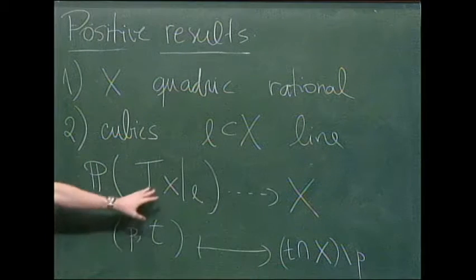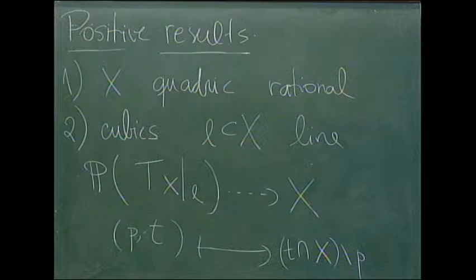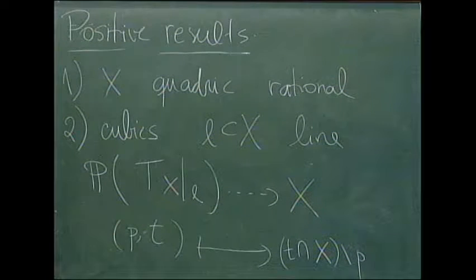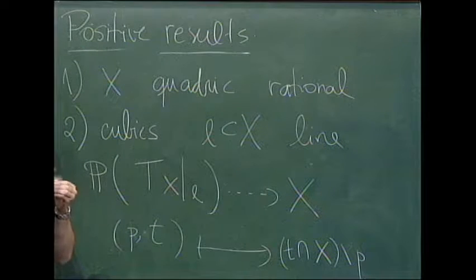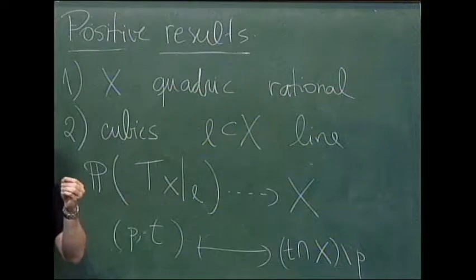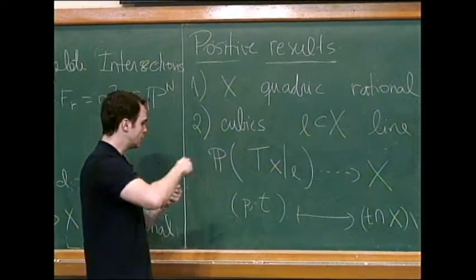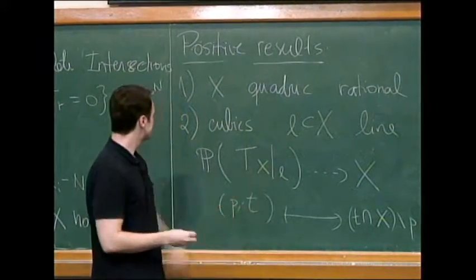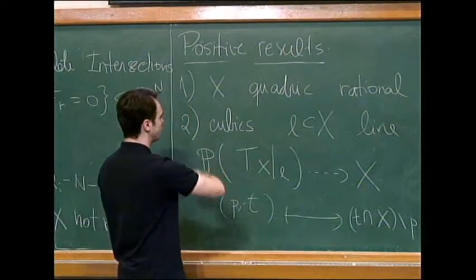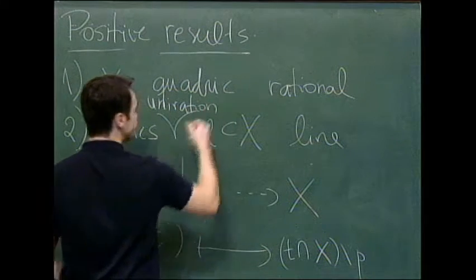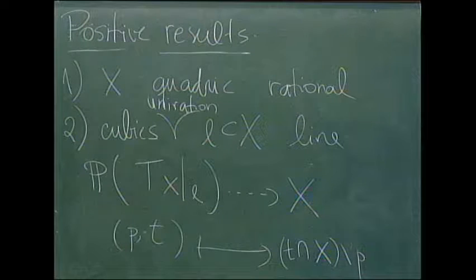And this will give, I can use this to construct a unirational parametrization of the cubic by sending the line intersect with X minus P. Because T is a tangent, it intersects this point P on the line with multiplicity two. So it will intersect a cubic at a third point. And you can just map the line and the point in the line to that third point. So this gives a unirational parametrization. So cubics are unirational as soon as they have a line, and they will have at least 27 lines. So we're fine.